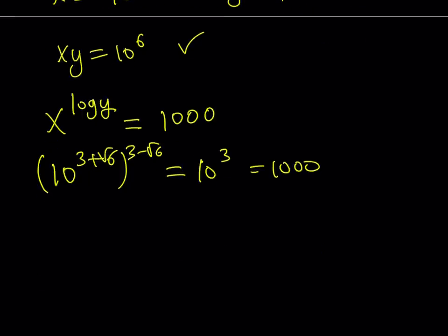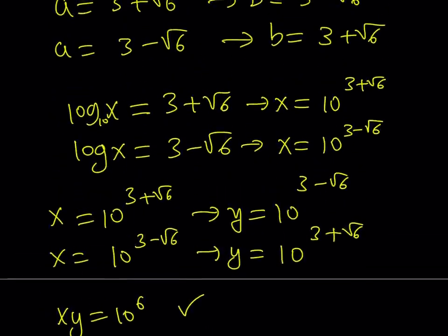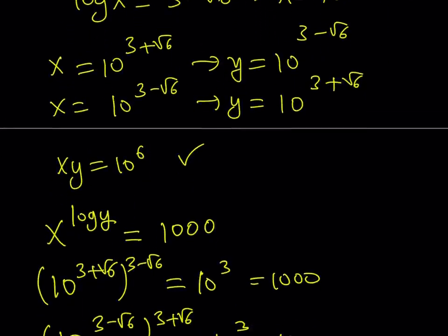What about when you switch them around? Interestingly, it's also going to work because the commutative property is going to allow you to use this property. So, even though the equation doesn't look like it's symmetrical, both of the solutions are going to work, as you can see here.